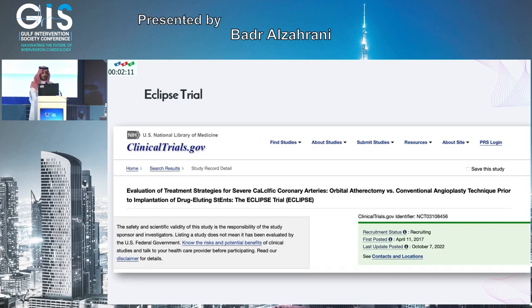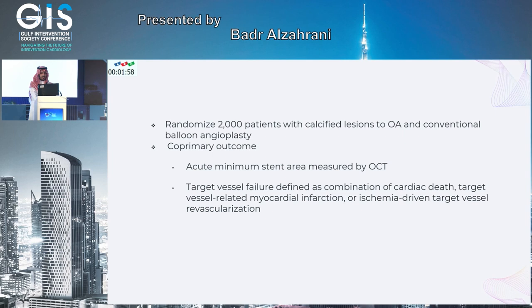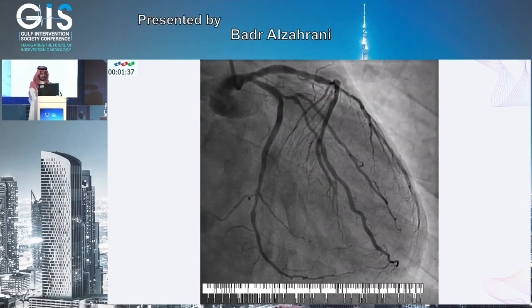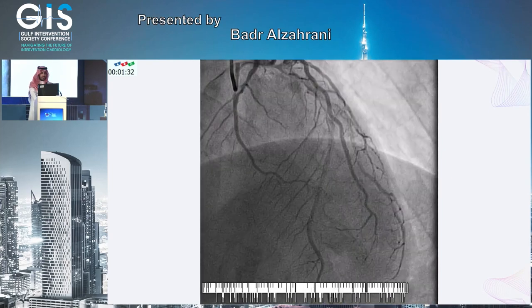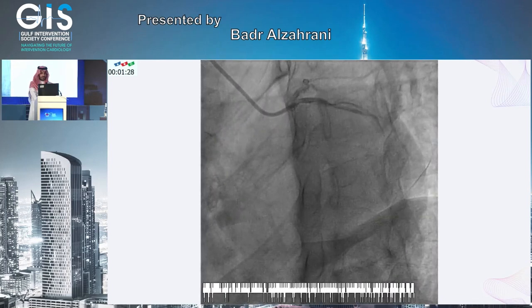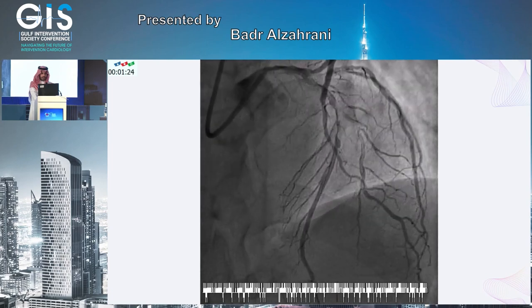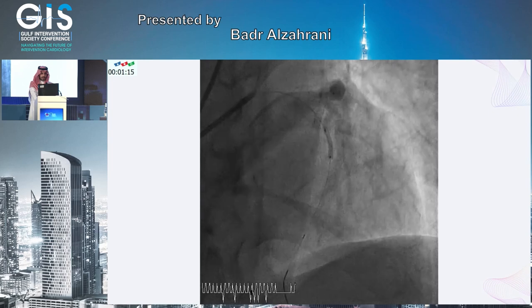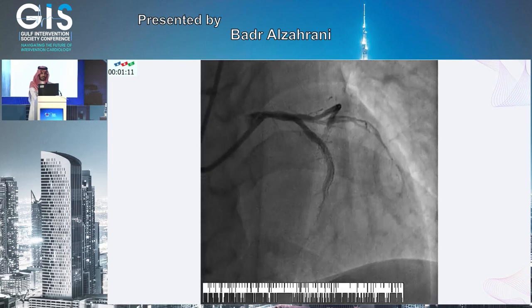The ongoing Eclipse trial is randomizing 2,000 patients with severe calcified arteries to orbital atherectomy versus conventional angioplasty; results expected next year. Outcomes include acute minimal stent area by OCT and target vessel failure. A 55-year-old gentleman with severe proximal-to-mid LAD calcification had IVUS showing 180-degree calcium. After placing a viper wire in the distal LAD, multiple orbital atherectomy runs were performed, followed by balloon angioplasty and successful, well-expanded stent placement.